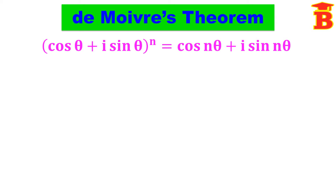This we can remember easily. If we have whole power any number, we can bring that number inside. So (cos θ + i sin θ)^n — bring the n inside and multiply with the angle — we get cos nθ + i sin nθ. Remember, we can apply this theorem only if we have the real part cos θ and imaginary part sin θ.